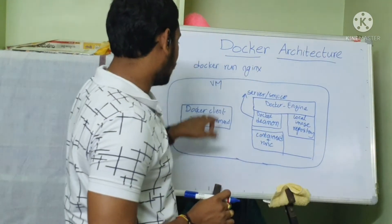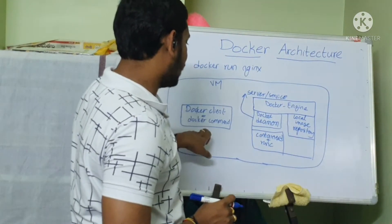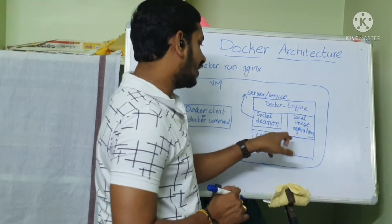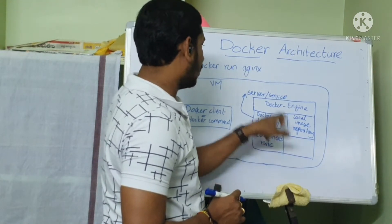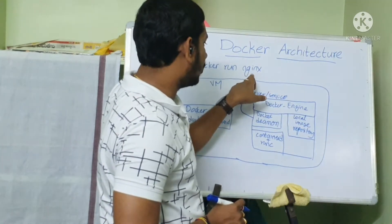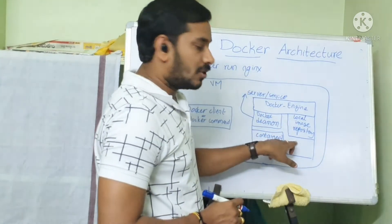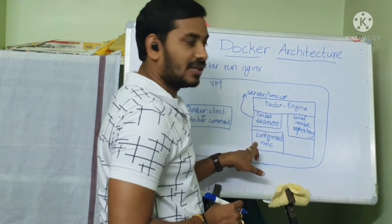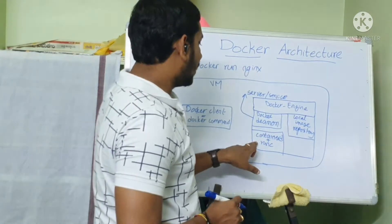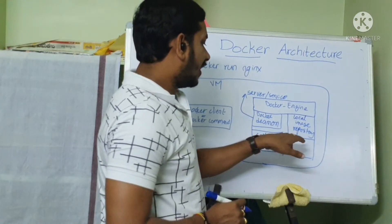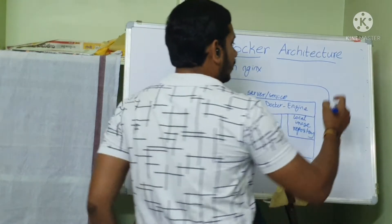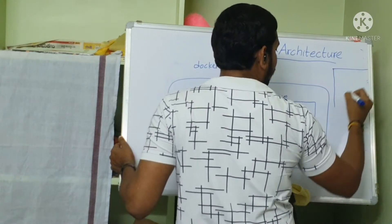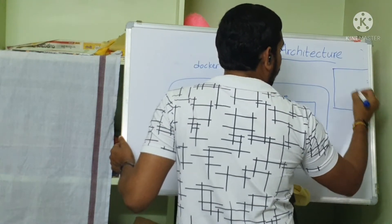Whenever you run Docker run nginx here, it reaches our Docker daemon, then it will check whether any image is already available or not. If it is available already, then it will fetch it and pass to containerD so that it can create the container out of it. If it is not available, then it will fetch it from Docker Hub.